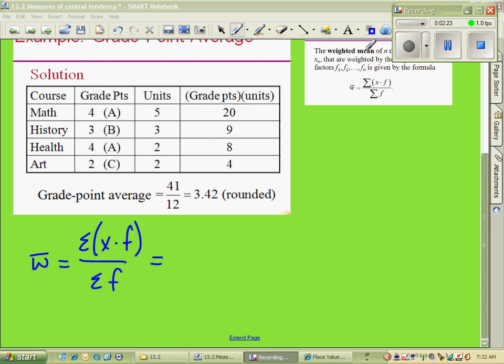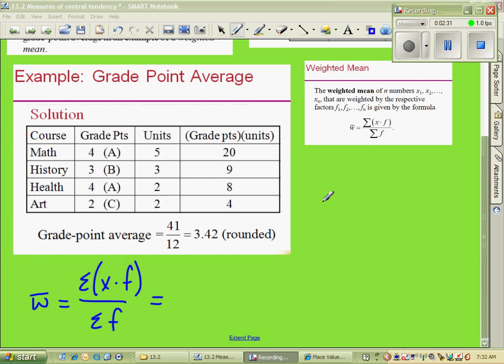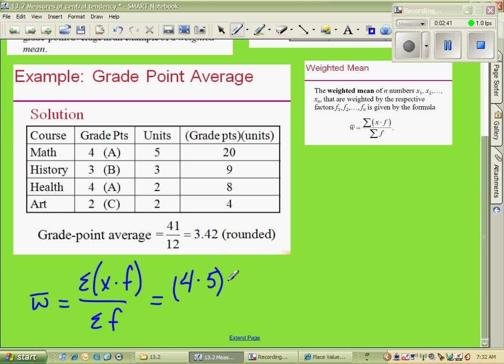There's our formula. Now we take our values and put them in there. In the math class, we made a grade of an A. That gave us 4 points. It had a factor of 5. Plus, in history class, we made 3 points, or a B. It had a factor of 3.